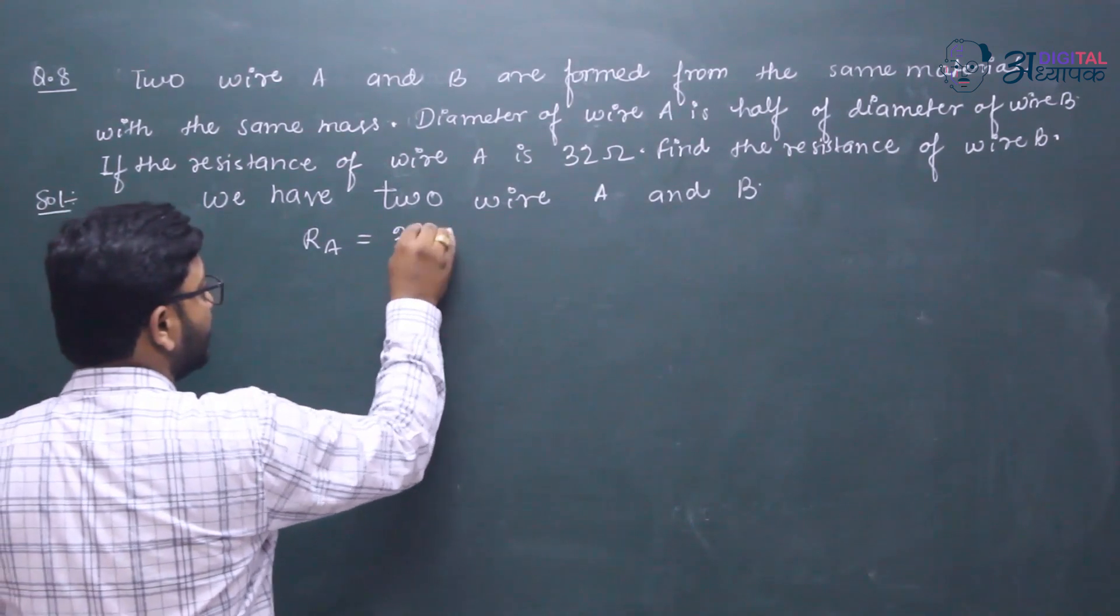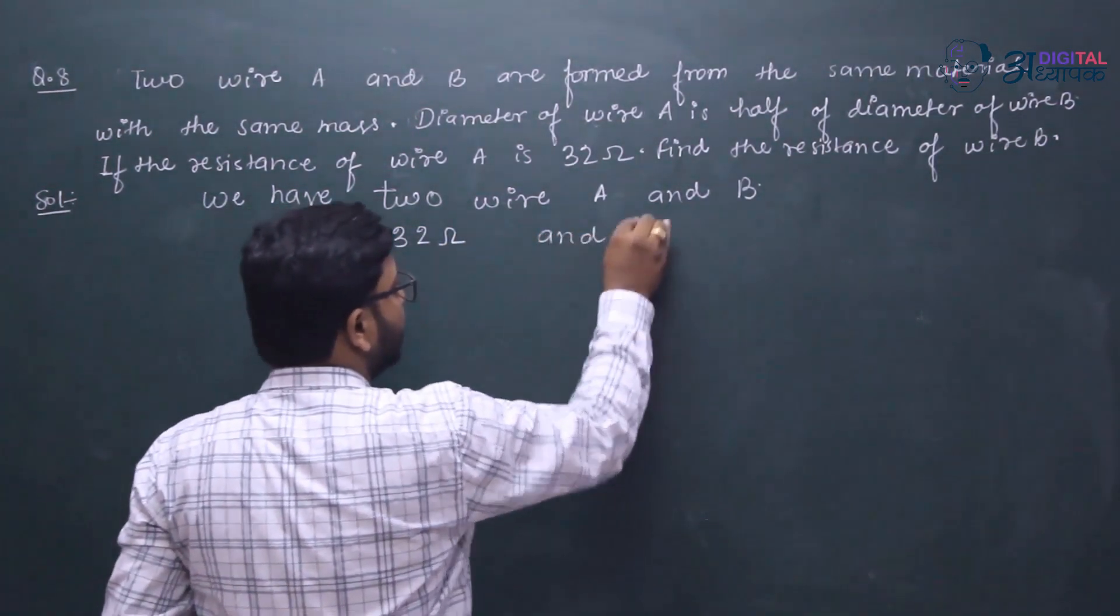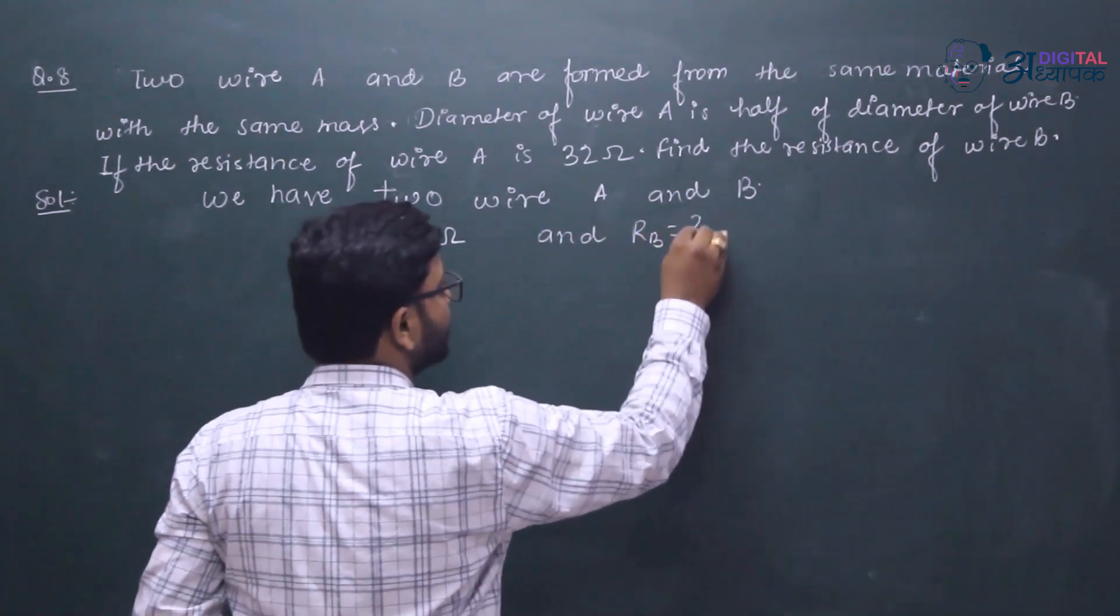Resistance of A is equal to 32 ohm, and RB is the question mark.